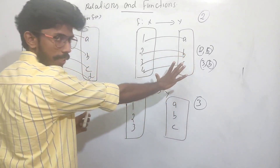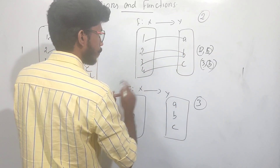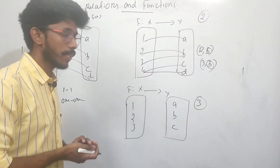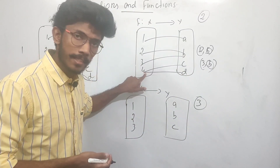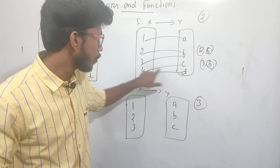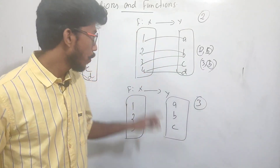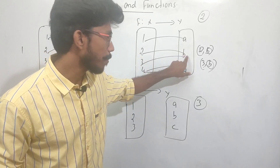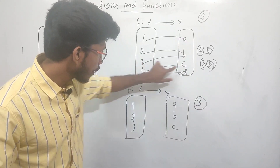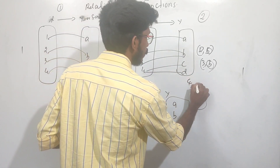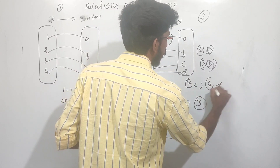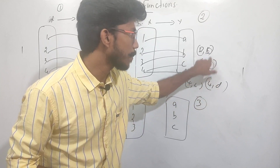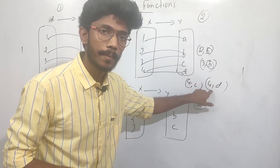This function maps to D. But this is not a function because 4 maps to both C and D. You can have one image with one element, or two elements mapping to the same image. But one element cannot have two images. Here 4 maps to both C and D, so it is not a function.